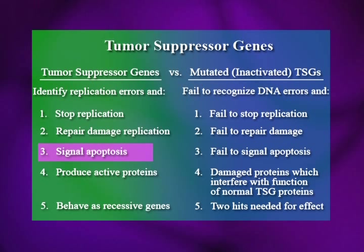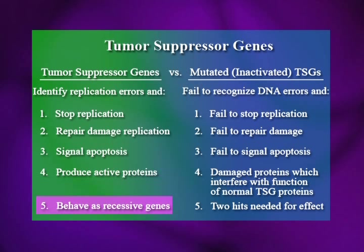Apoptosis is the active suicide the cell can signal — the cyanide pill — the opposite of necrosis, which is passive death. Tumor suppressor genes behave as recessive genes because if one copy is still active, theoretically it could halt the process. The oncogene acts as a dominant gene because it only takes one bad copy to upregulate everything. So this is a very interesting intertwined combination.